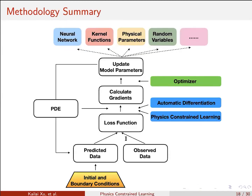This is a summary of the methodology. The only addition is that you can also use physics-constrained learning if you have an implicit scheme. For the model parameters, you can have physical parameters, kernel functions like piecewise linear or radial basis functions, neural networks, or even random variables — for example using a generative neural network with adversarial training or optimal transport-based training.